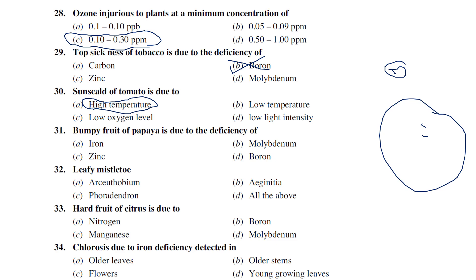Bumpy fruit of papaya is due to boron toxicity. Due to excess boron, a condition called bumpy fruit is observed in papaya.